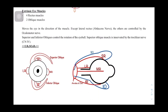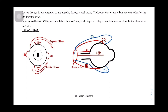The extrinsic eye muscles consist of four rectus muscles and two oblique muscles. The superior rectus moves the eye upward; the inferior rectus pulls it downward; the medial rectus pulls it medially; and the lateral rectus pulls it laterally. The superior oblique causes medial intorsion (inward rotation), while the inferior oblique causes lateral extorsion.